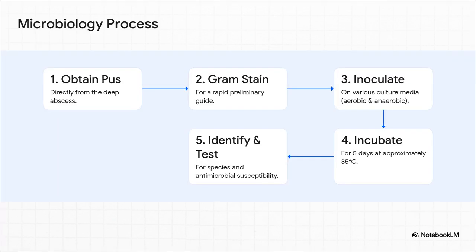Once you have that precious pus sample, a meticulous process kicks off in the lab. It starts with a Gram stain, which gives you a quick preliminary look at what you might be dealing with. Then that sample gets plated onto a whole range of different media designed to grow both aerobic and anaerobic bugs. After incubating for up to five days, the real work starts — identifying the exact species of bacteria and, crucially, running tests to see which specific antibiotics will actually kill them.